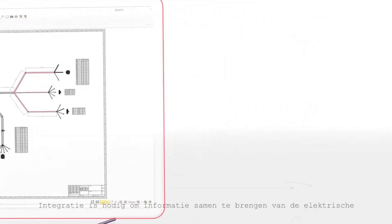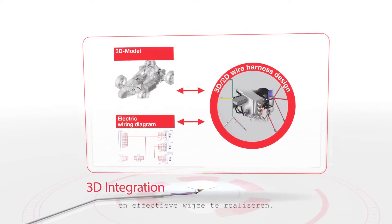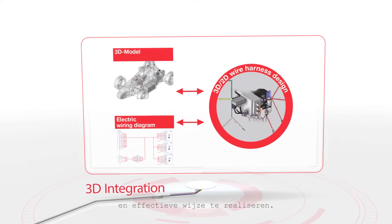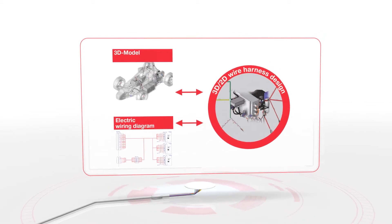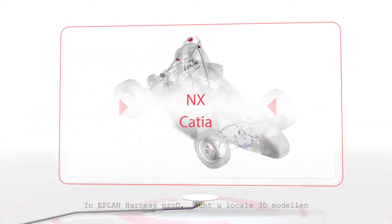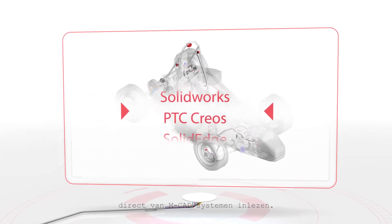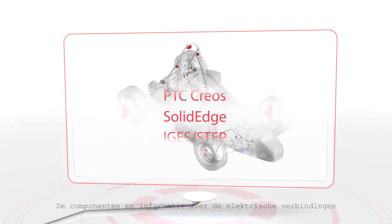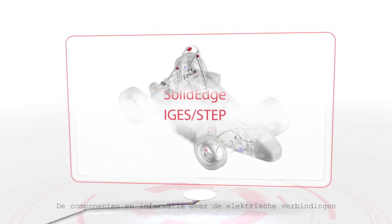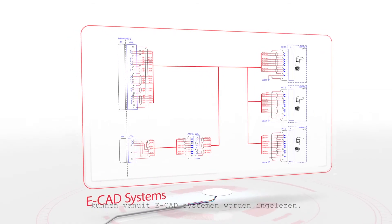Integration is required to bring together information from electrical and mechanical domains to enable efficient and effective wire harness design. In ePlan Harness Pro-D, users can read in native 3D models directly from MCAD systems and also components and electrical connection information from ECAD systems.